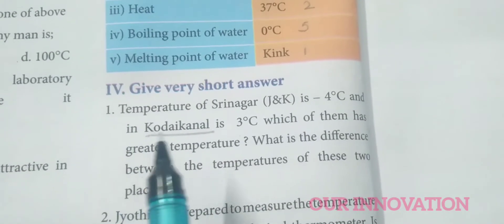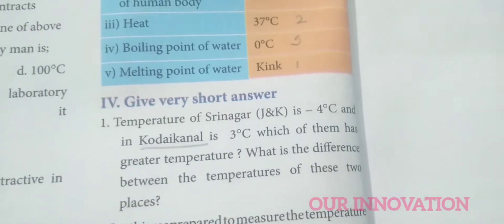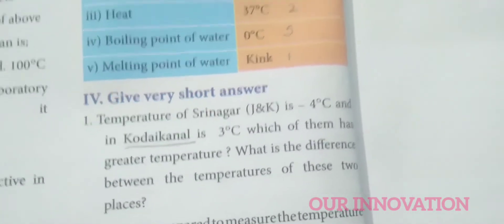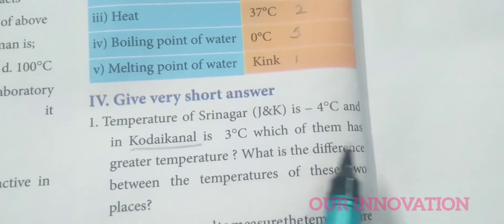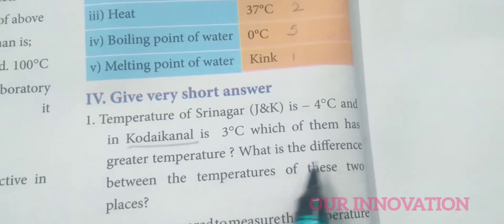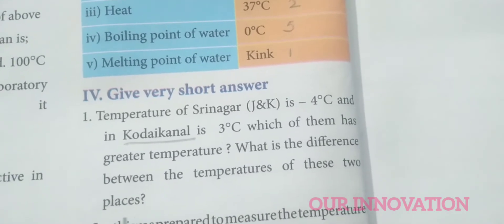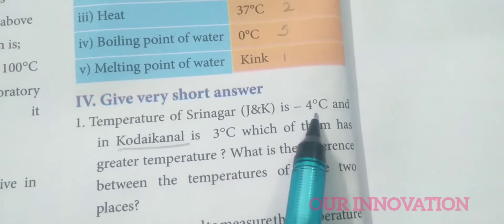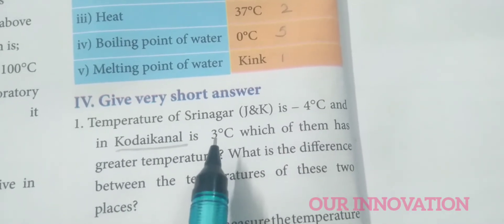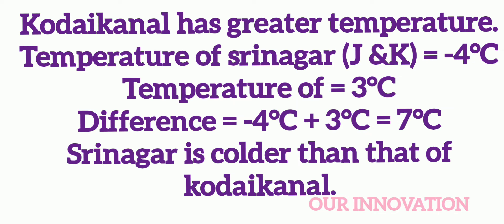Give short answers. The temperature of Sri Nahar, that is Jammu and Kashmir, is minus 4 degree Celsius, and Kodekanel is 3 degree Celsius. Kodekanel has the greater temperature. The difference between the temperatures is: minus 4 plus 3 equals 7 degree Celsius. We can conclude that Sri Nahar is colder than Kodekanel.